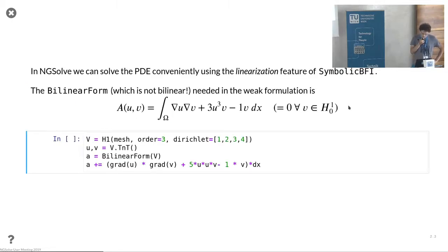What you can do for this is you can write down the bilinear form again, not bilinear in both arguments, but you can directly... oh this is again wrong, I think this was wrong at the last user meeting already, but okay, so you can directly write down what you would like to have.